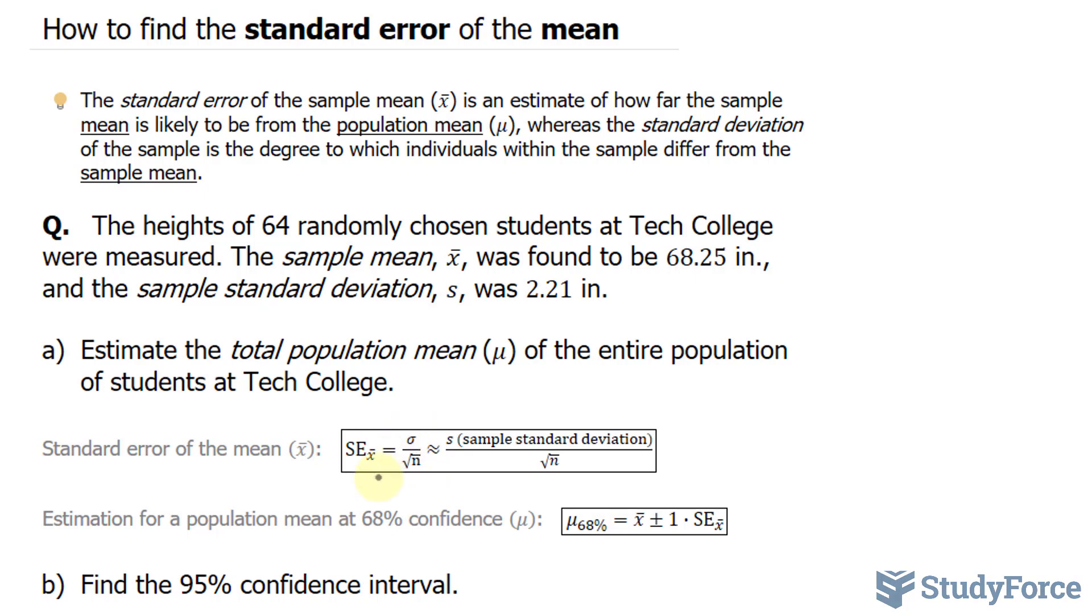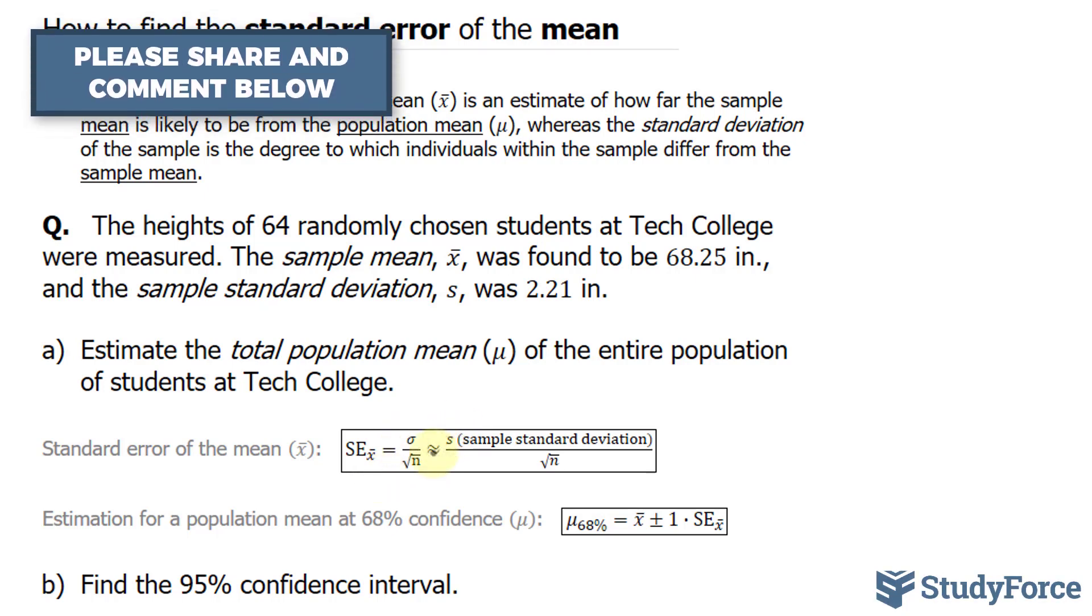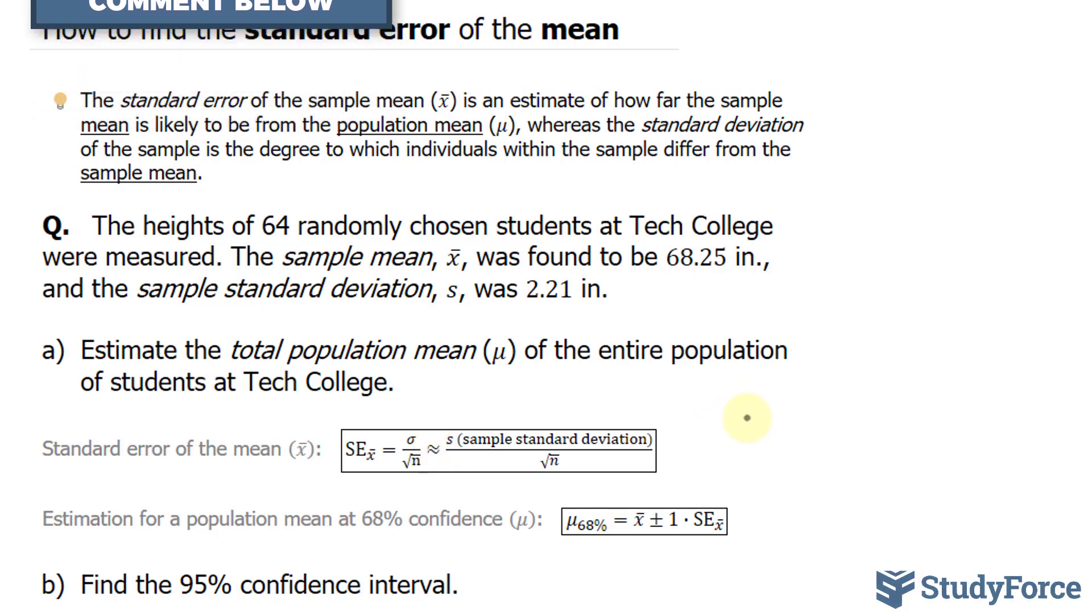Because this is not usually known, we have to use s, which will still give us a good measure of the standard error. That being said, we will substitute 2.21 divided by the square root of 64.